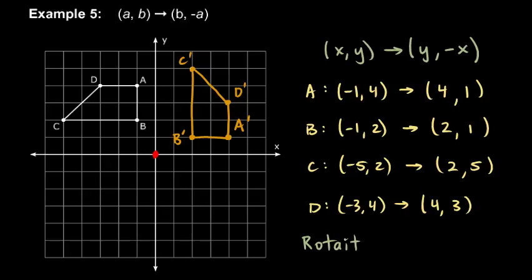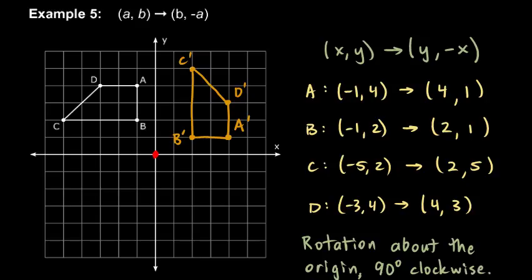This is a rotation about the origin. And it turns out that this is exactly 90 degrees. And we can say 90 degrees clockwise. If you were to measure the angle between that and that, that's a right angle. And you might be able to see that because from point C here to the origin, we go down 2 and over 5. And then from the origin to C primed, we go to the right 2 and up 5.